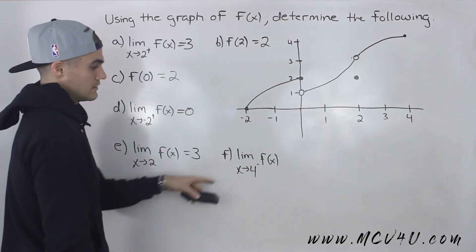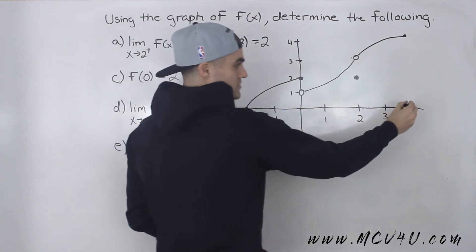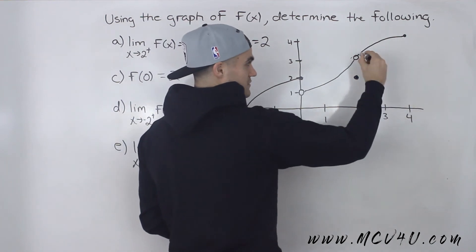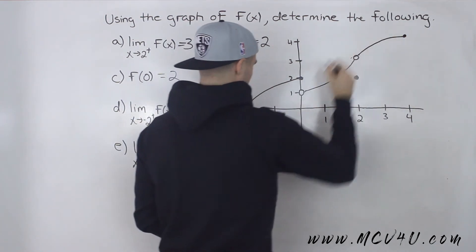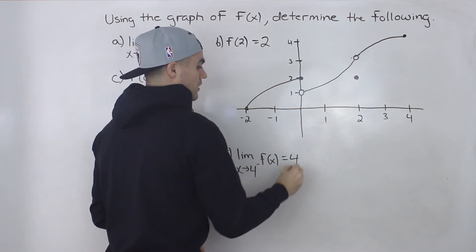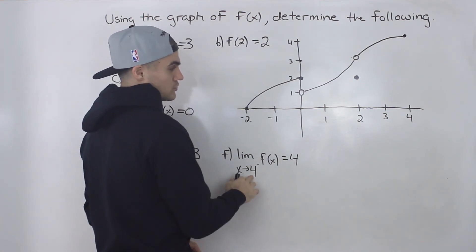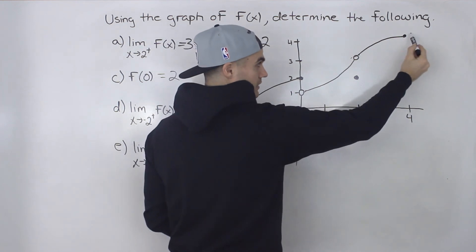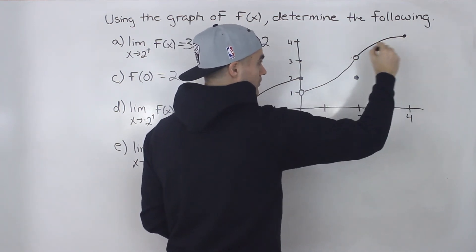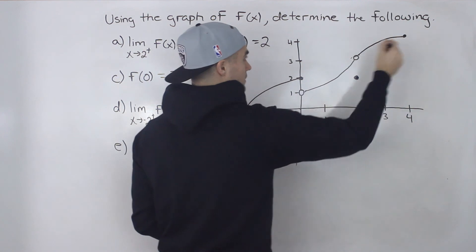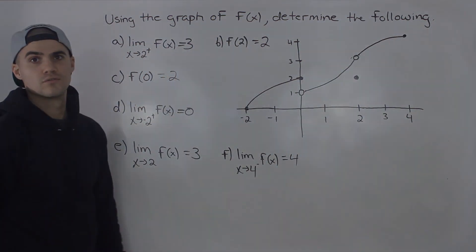The limit as x approaches four from the negative side. As we approach this x value of four from the negative side, the function approaches a y value of four. We can't approach four from the positive side because there's no function over there. But we can approach it from the negative side and it approaches a y value of four.